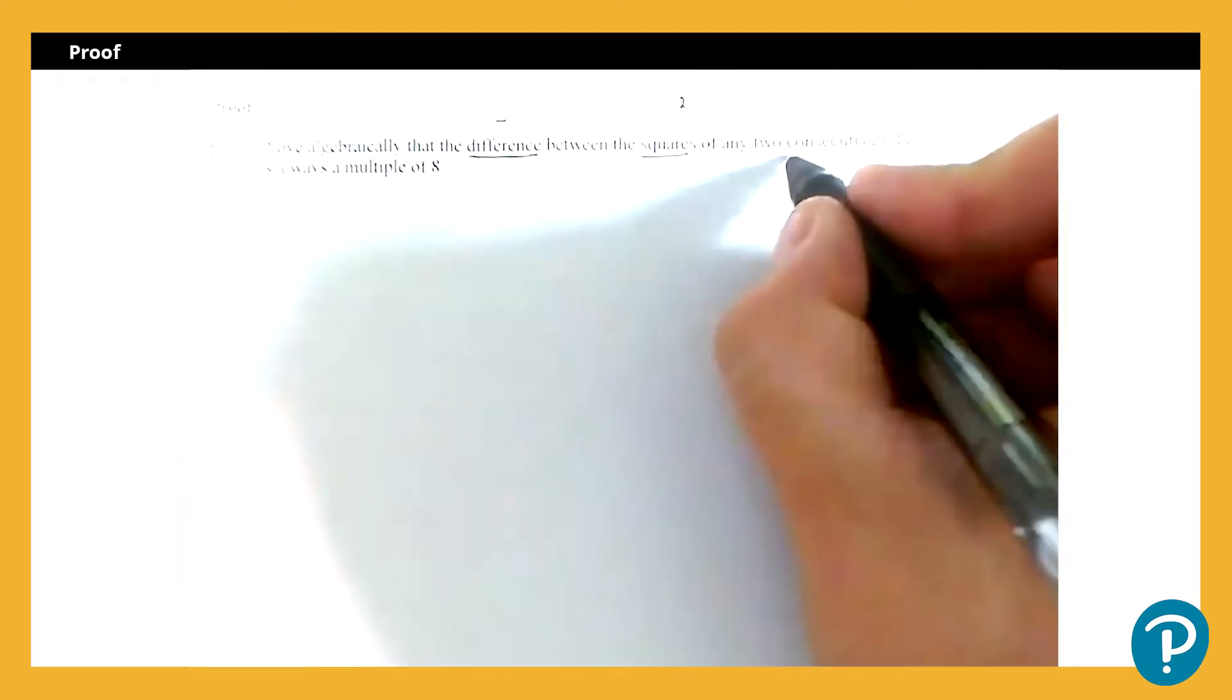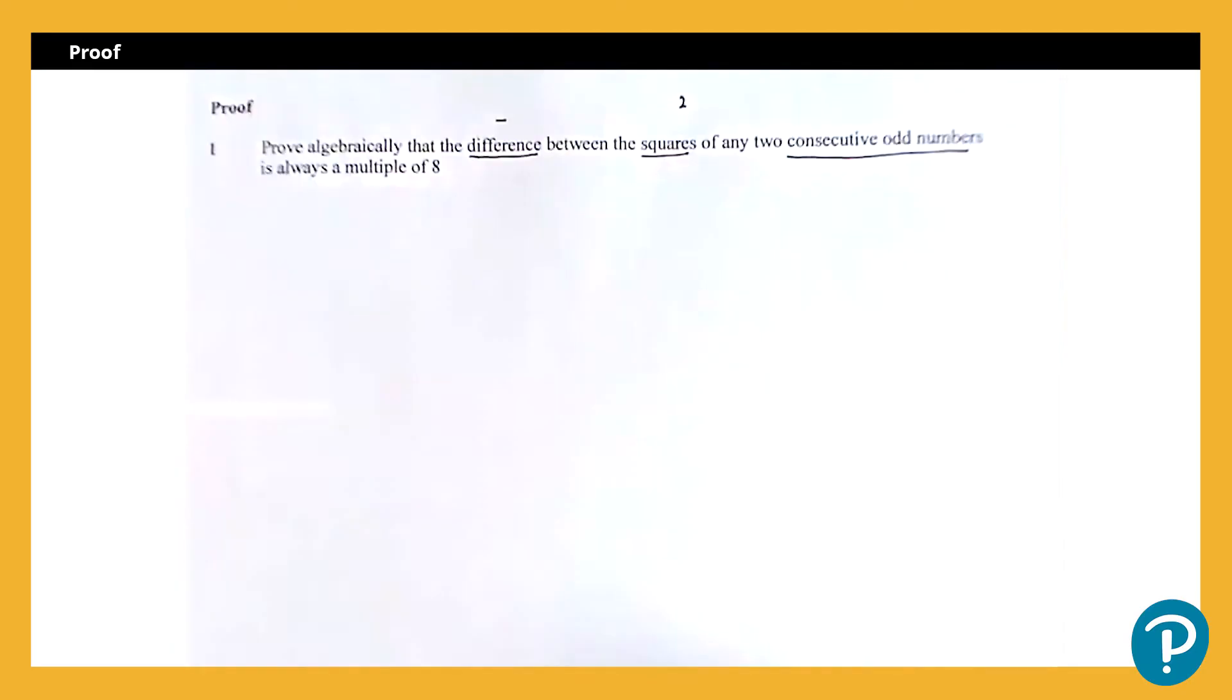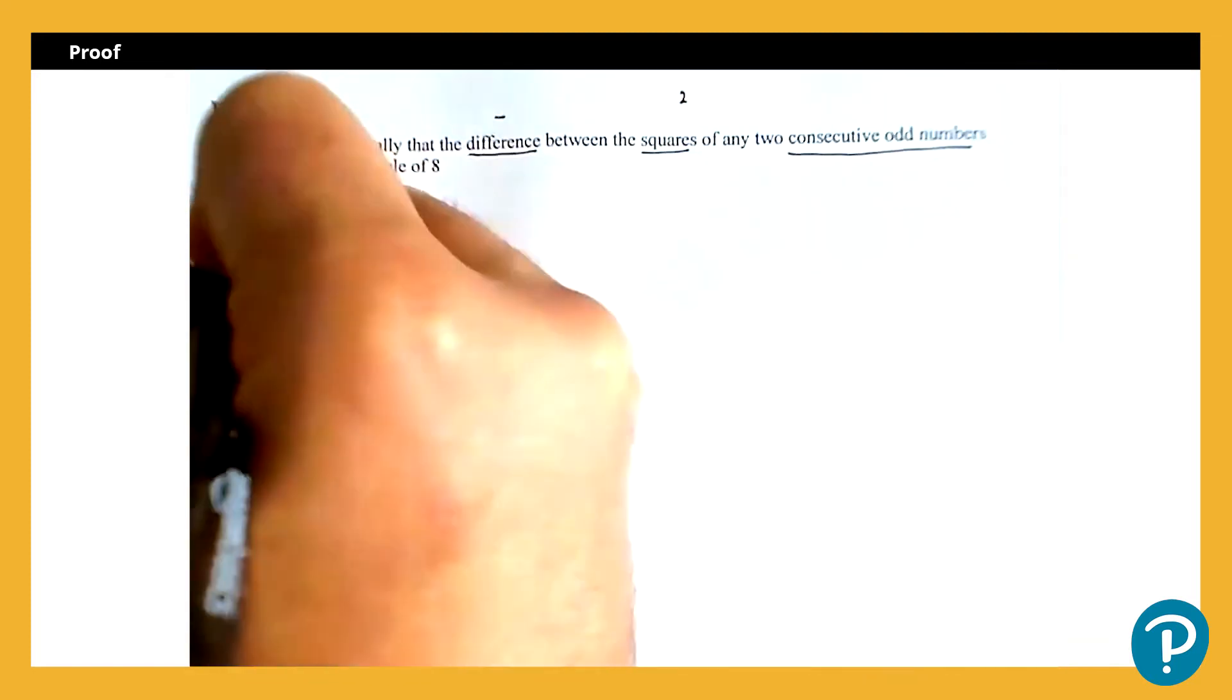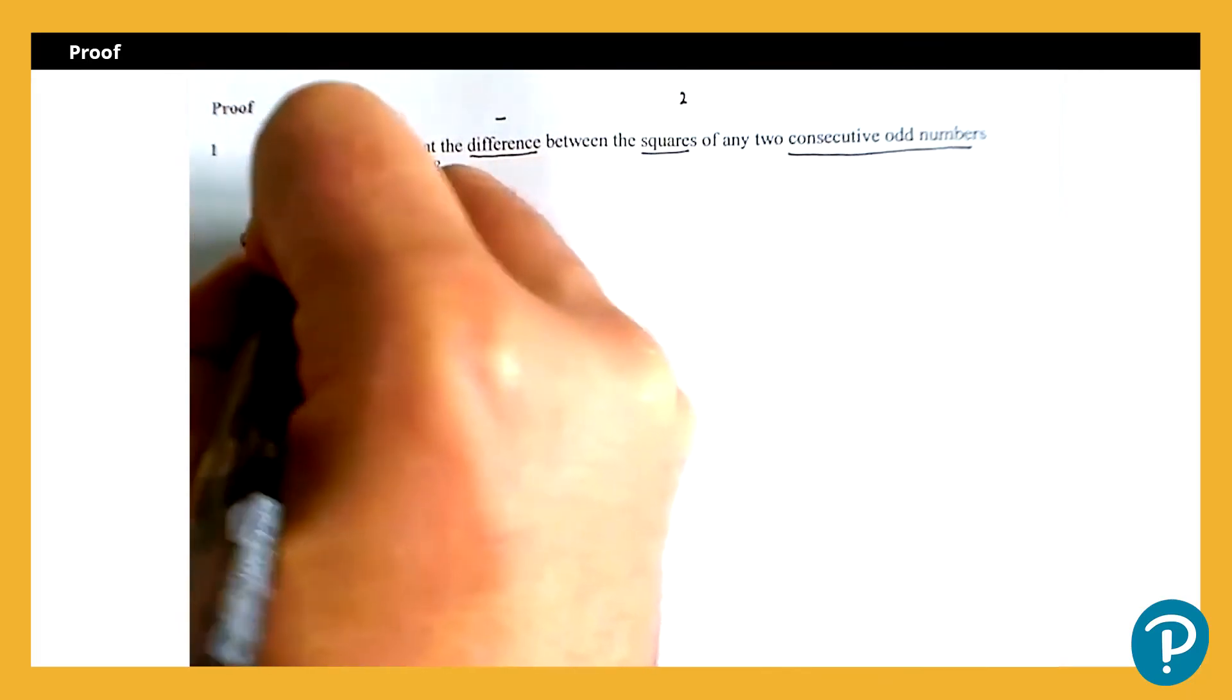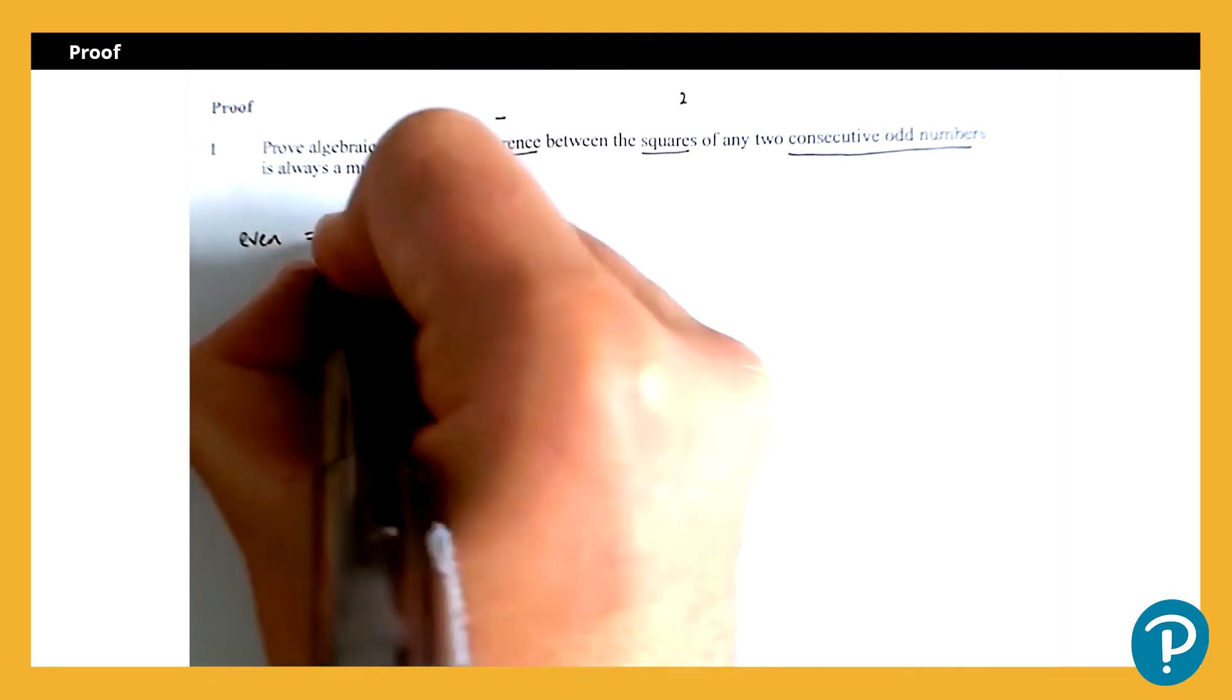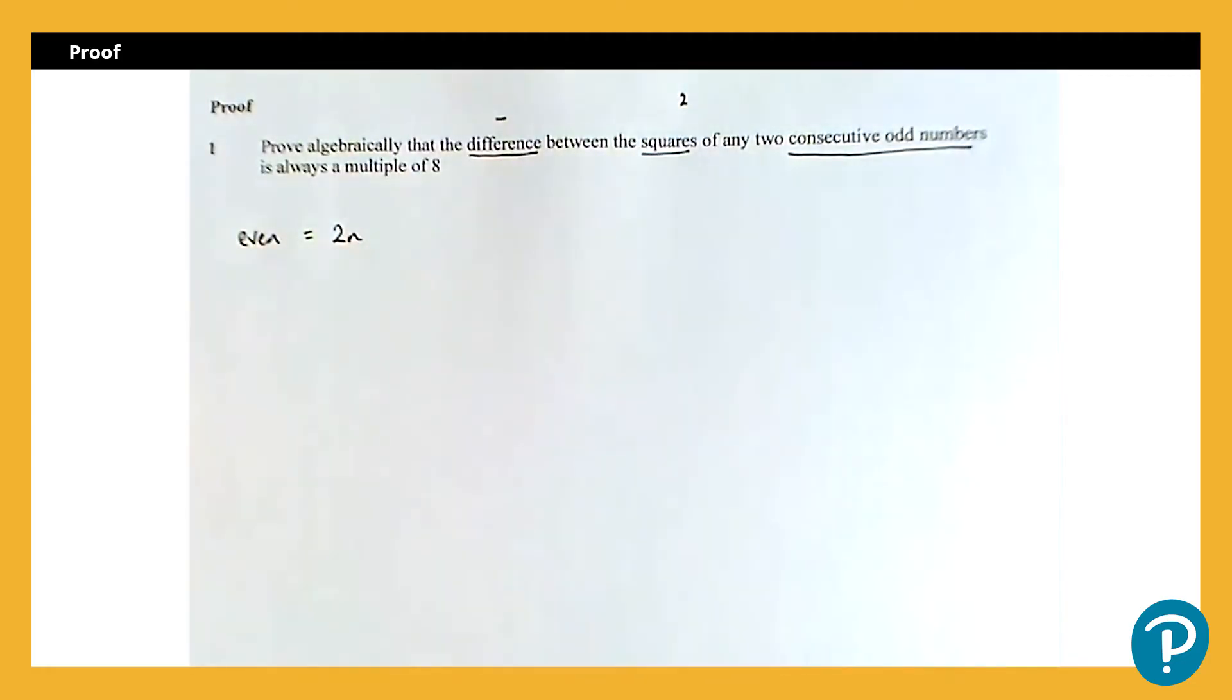And we've got consecutive odd numbers. Now quite often when we're proving by deduction, we have to be able to produce algebraic expressions for odd numbers, for even numbers, or consecutive numbers, or consecutive odd or even numbers like we are here. So generally speaking, if we wanted an even number, well an even number is defined as a multiple of two. So an even number would be 2n for some value of n, for some integer n.